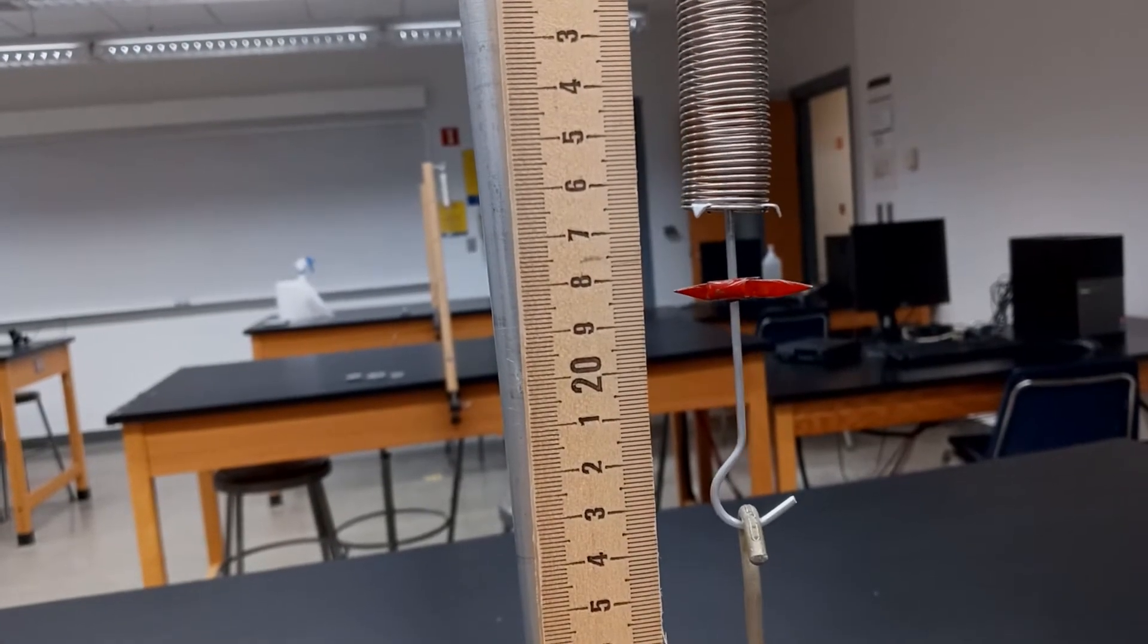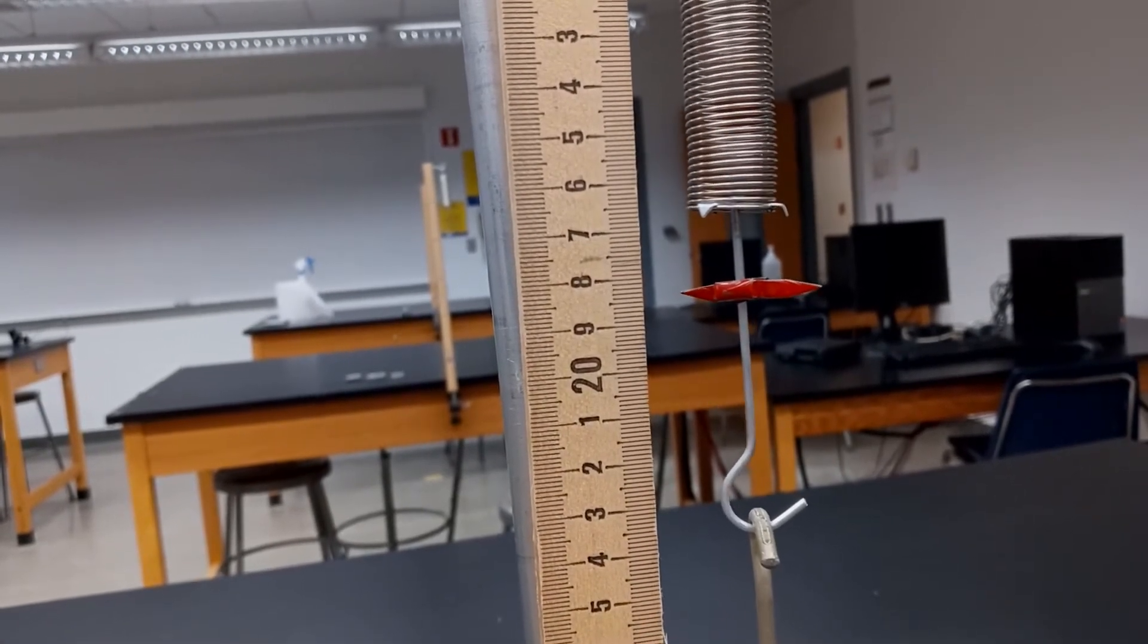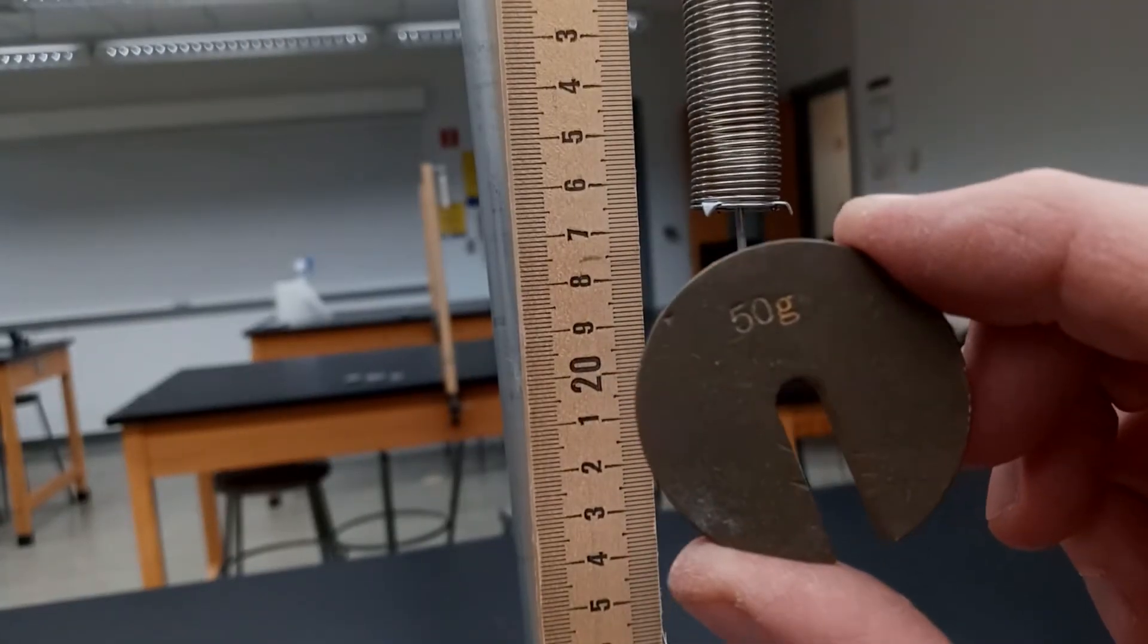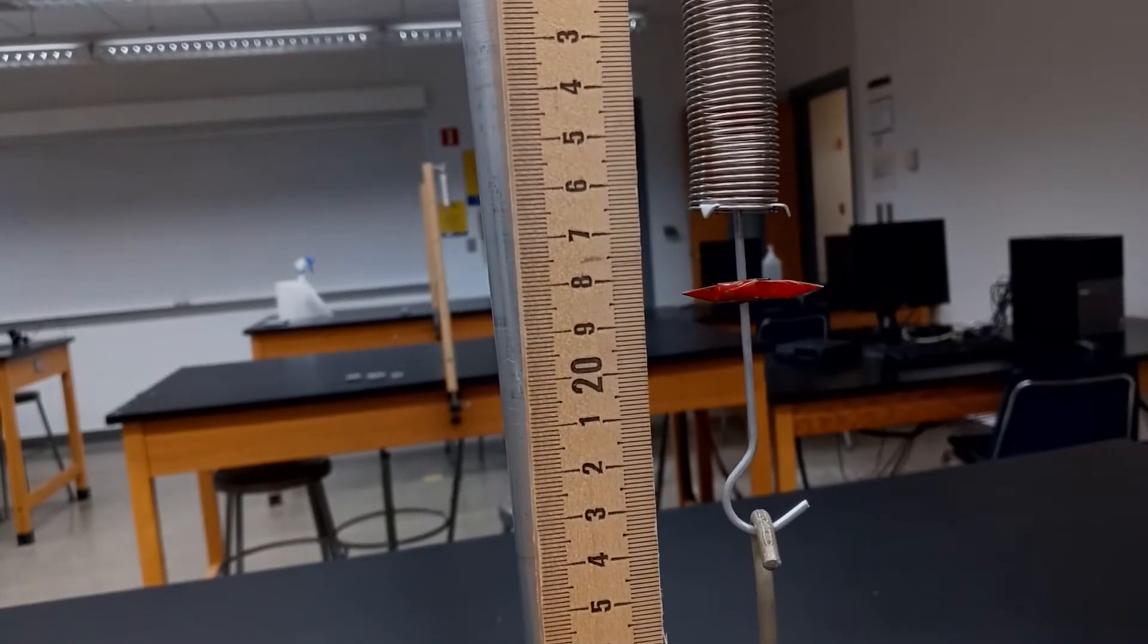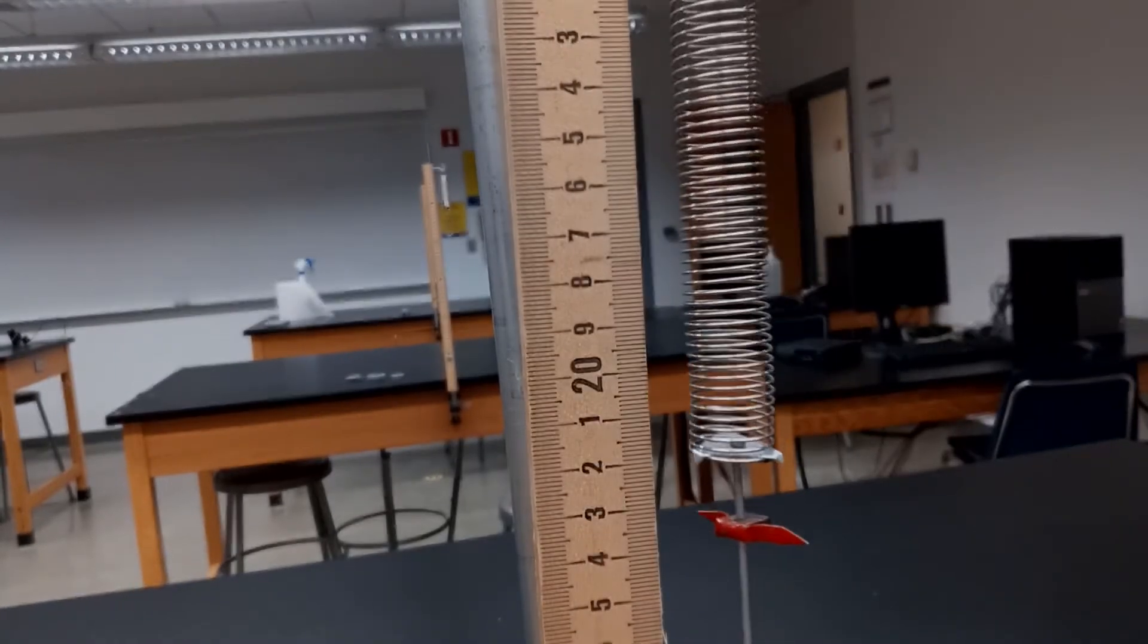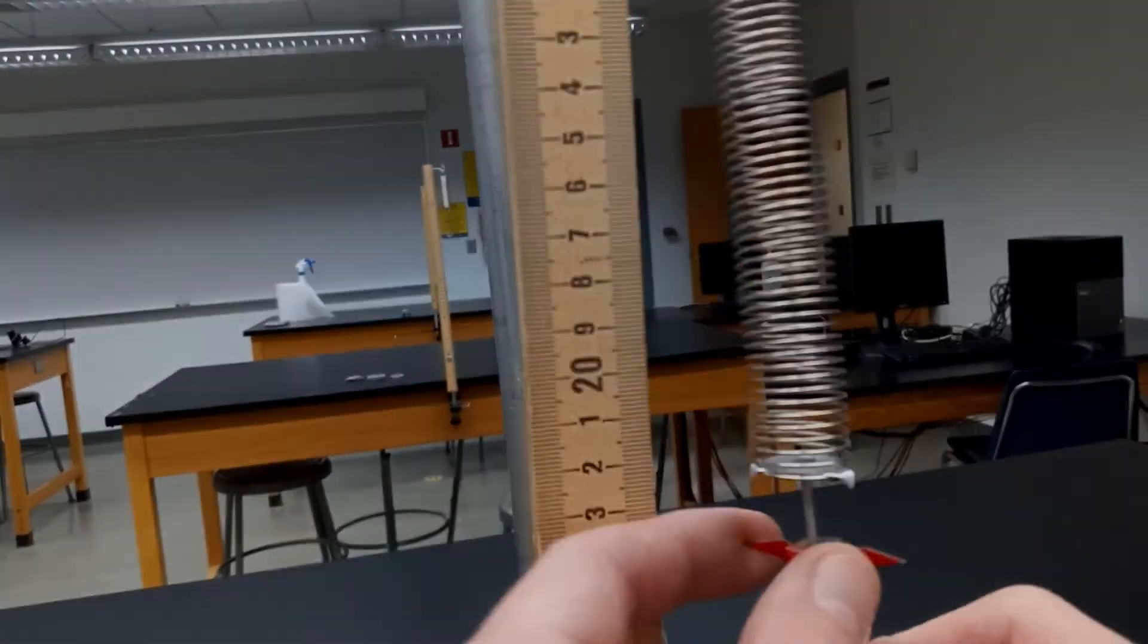The red needle shows the relative extension of the spring with just the mass holder of 50 grams attached to it. We now add a mass of 50 grams for a total of 100. I'll just adjust that needle.